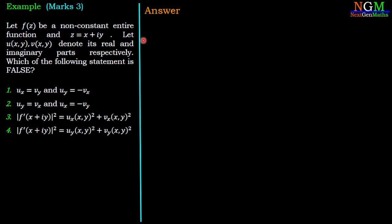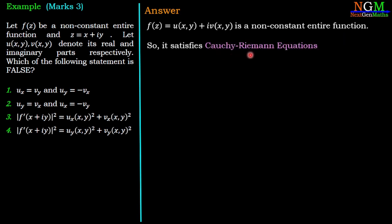It is completely a result-based example. Here we have given f(z) = u(x,y) + iv(x,y) is a non-constant entire function. So it must satisfy the Cauchy-Riemann equations which are u_x = v_y and u_y = -v_x.